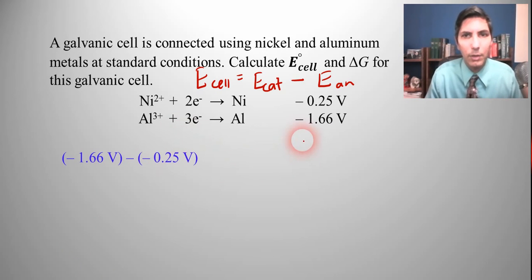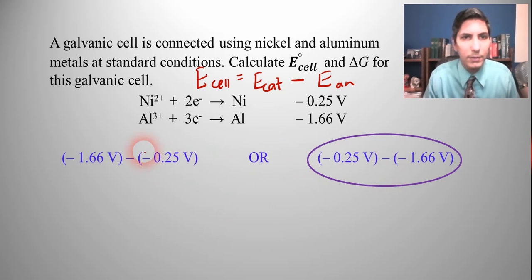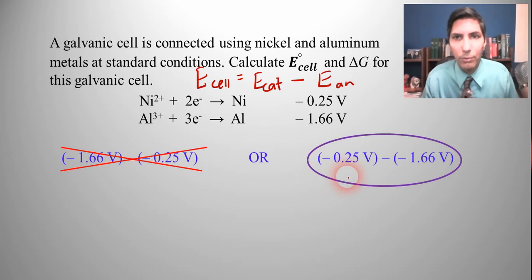So I can write it like this. We have negative 1.66 volts minus negative 0.25 volts, or I could flip it and have it where it's negative 0.25 volts minus negative 1.66 volts. So which one gives me the positive number? Well, just looking at these casually, it looks like it's the one on the right that gives me the positive number. This on the left would give me a very negative voltage and we can't have that.